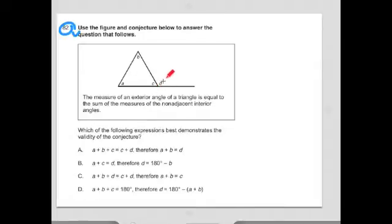By the way, this is our exterior angle and these are our non-adjacent interior angles. Which of the following expressions best describes the validity of the conjecture? And it gives us all these possibilities. So this is where I want you to sort of review your core math facts.